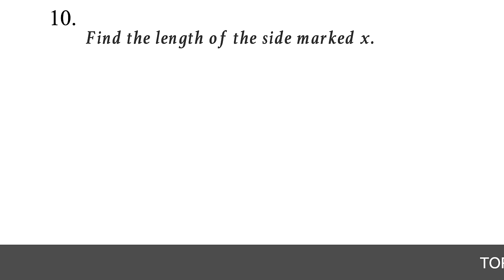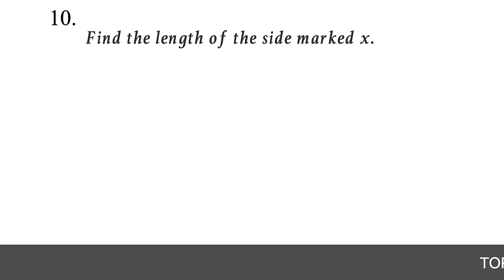Question 10. Find the length of the side marked x. When you see this mark on a triangle, it means it's a right triangle with this angle being 90 degrees. Use the Pythagorean theorem — given on the GED formula sheet: hypotenuse² = a² + b². Here the hypotenuse is what we're finding: x² = 4² + 3² = 16 + 9 = 25. Taking the square root of both sides: x = 5. Please note that most questions can be converted to word problems.